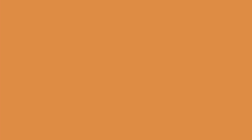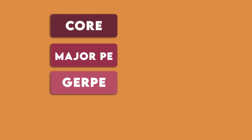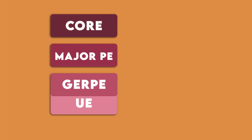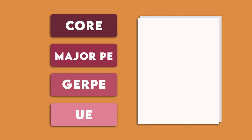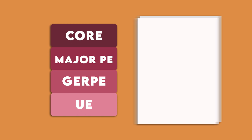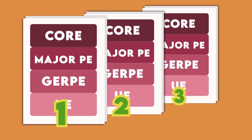To prepare for this, choose your Core, Major PEs, Jerpees, and UEs, and make sure they don't clash with each other. It'll also be pretty smart of you to come up with another two backup plans, which you can then save under Plan 2 and 3 in the Stars Planner, just in case you're unable to get your ideal plan due to the high demand.